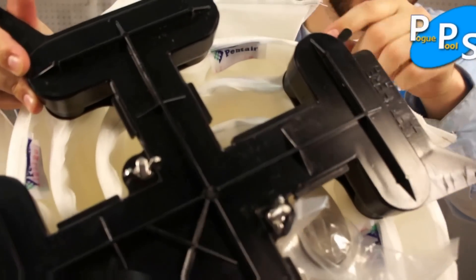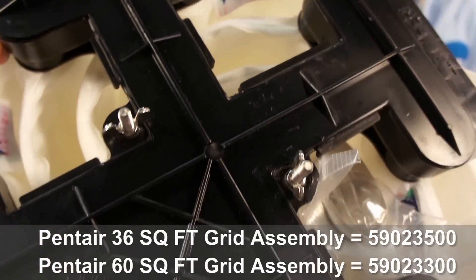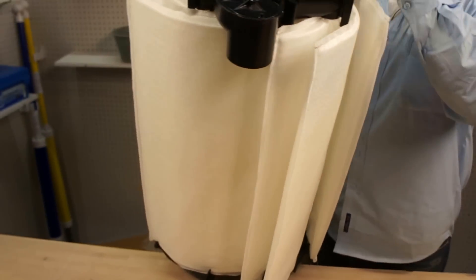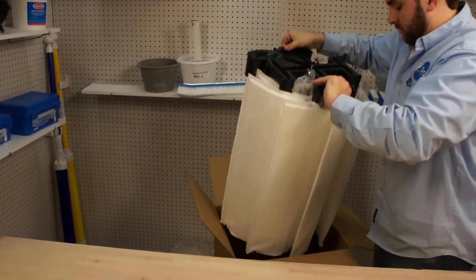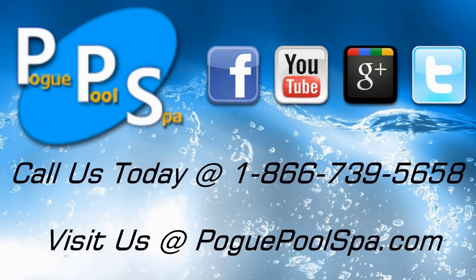So anyways, these grid assemblies come in 36, 48, and 60 square feet, and if there's anything else you need, just let us know at PoolPullSpa.com. Thank you.